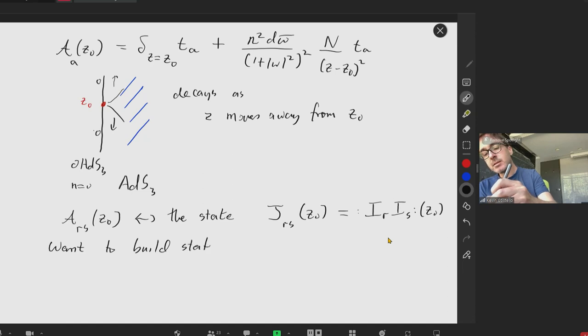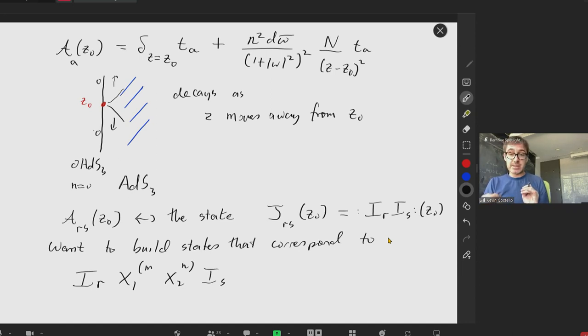So we'd like to also build the states that correspond to these symmetrized traces, which we have. And what we'll find is that the ways of modifying the boundary condition at this point match precisely with the states in the CFT.